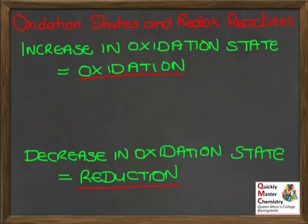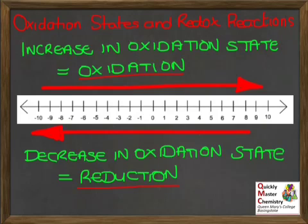And if we see it decrease its oxidation state during a reaction, then that thing has been reduced — reduction has taken place. Now, let's just consider what we mean by increase and decrease, because sometimes people do get confused here. When we say oxidation means an increase in oxidation state, this means heading to the right on our number line, towards more positive values.